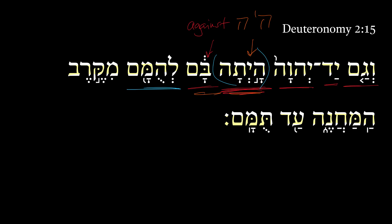And so we have here the Qal infinitive construct plus a lamed preposition of the root hammam, plus a 3MP ending. Now, I know you see a hey-mem-mem there, but that's not the root. The second mem — the third root letter — is actually represented by this dagesh in the geminant verbs. And then we have the 3MP suffix on here.